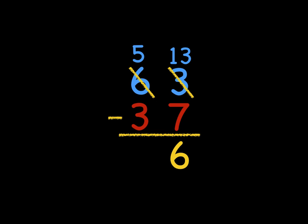Easy. Five minus three is two. And now we know that our answer is twenty-six. And that is subtraction with two-digit numbers and regrouping.